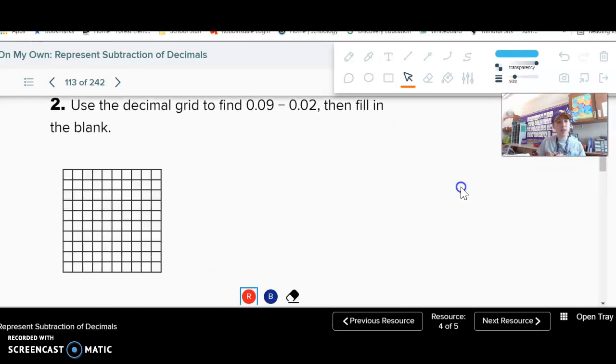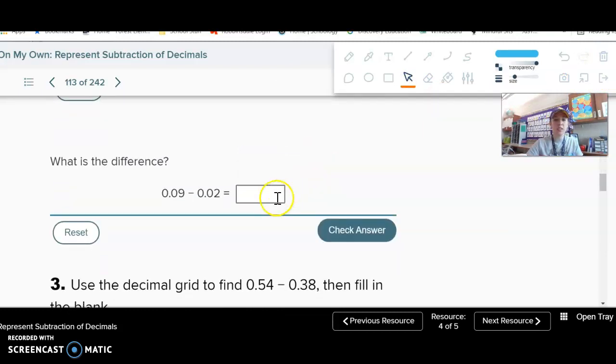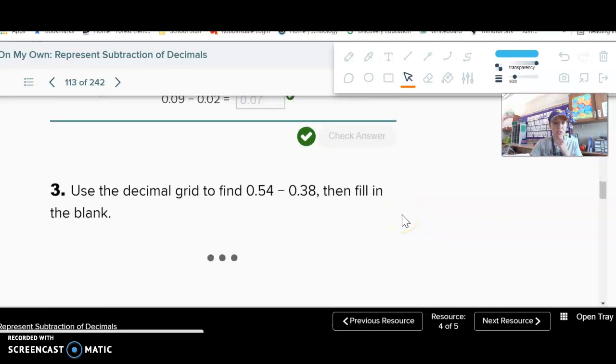All right, go ahead and find 0.09 minus 0.02. I know it might feel simple right now, but sometimes we start simple and then we'll get harder as we go, but it's good to have the practice with the simple numbers. So if I cross off those two, I'm left with seven hundredths. I left that there just for you, because sometimes it is different than erasing, right? I'm not asking you to erase your things - you can just cross them on. Make sure you do write it correctly - don't write 0.7 because that's a different number. Seven hundredths.